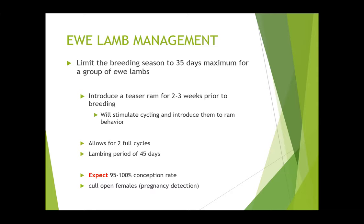Limit the breeding season to 35 days. If you can, don't synchronize them, don't do anything to manage them other than that they're well grown and ready to go. If you introduce a teaser ram — a vasectomized sterile ram — for two to three weeks prior to breeding, this will help stimulate cycling and introduce them to ram behavior before the real ram comes in. This alone can increase the conception rate on the first cycle in ewe lambs by 15 to 20%, because you'll have ewe lambs sitting on the fence not sure if they're quite pubertal, and bringing that teaser in will push them over into cycling. Also, if they get introduced to a teaser first, when the ram shows up it's not such a shock, and they're actually more likely to get bred in that first cycle.